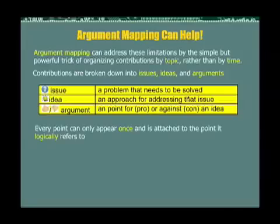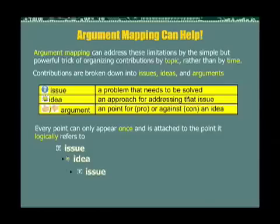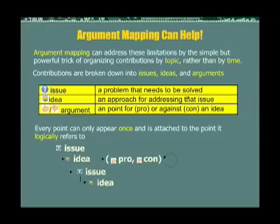Every point can only appear once and is attached to the point it logically refers to. A discussion in an argument map always begins with an issue representing the question to be addressed. That is linked to one or more ideas representing ways of addressing that issue. Ideas themselves can raise new issues, and those issues can have their own ideas responding to them. Every idea can have a whole tree of pros and cons interleaved with each other that discuss the merits of that idea.